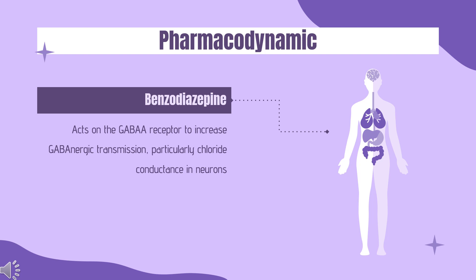The effect of Clobasam 20 mg and 80 mg administered twice daily on the QT interval was evaluated in a randomized, evaluator-blinded, placebo- and active-controlled (moxifloxacin 400 mg) parallel thorough QT study in 280 healthy subjects. In a study with demonstrated ability to detect small effects, the upper bound of the one-sided 95% confidence interval for the largest placebo-adjusted, baseline-corrected QTc based on the Fridericia correction method was below 10 ms, the threshold for regulatory concern. Thus, at a dose 2 times the maximum recommended dose, Clobasam did not prolong the QTc interval to any clinically relevant extent.